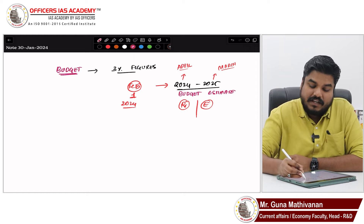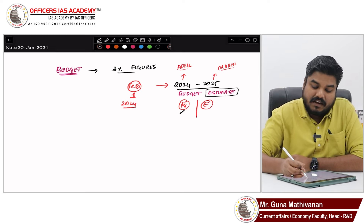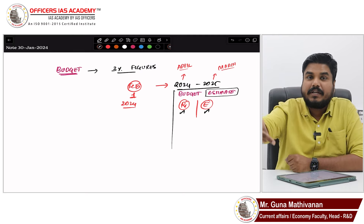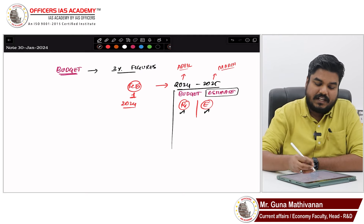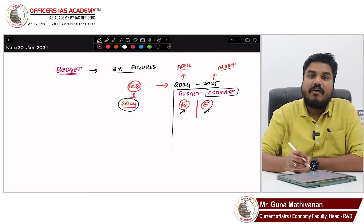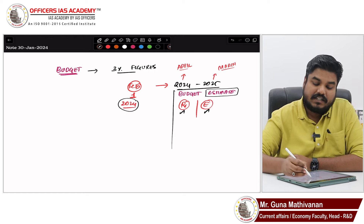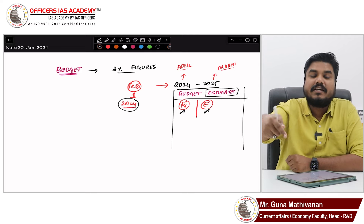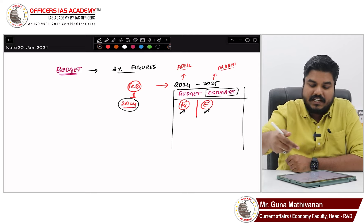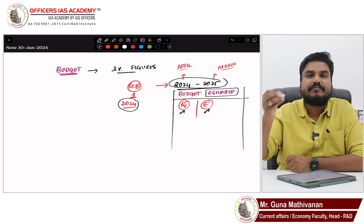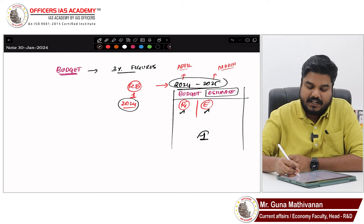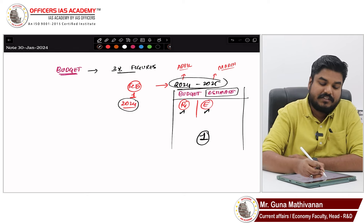What we are going to estimate is: what will be the revenue and what will be the expenditure for the upcoming year. The finance minister, standing on February 1st 2024, will present the Budget Estimate for the upcoming financial year — that upcoming year is called the budget year. This is one of the three important figures.